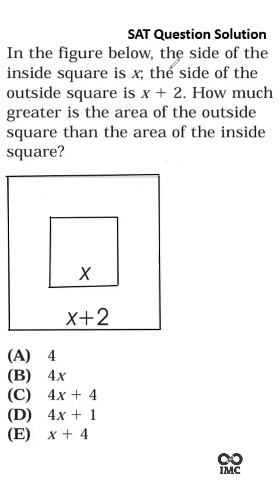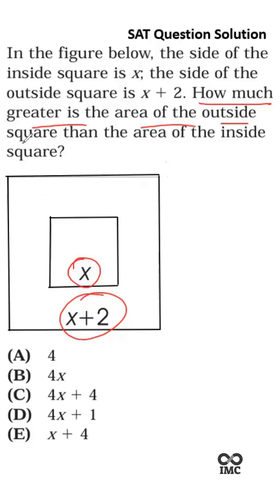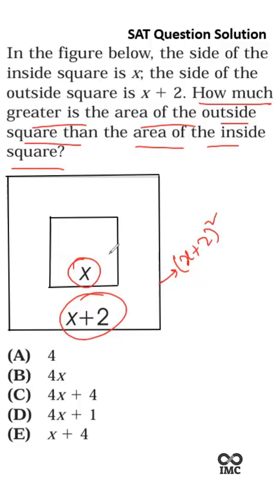The question says: in the figure below, the side of the inside square is x and the side of the outside square is x plus 2. How much greater is the area of the outside square than the area of the inside square? The area of the outside square will be length squared, that means x plus 2 whole squared, and the area of the inside square will be x squared.